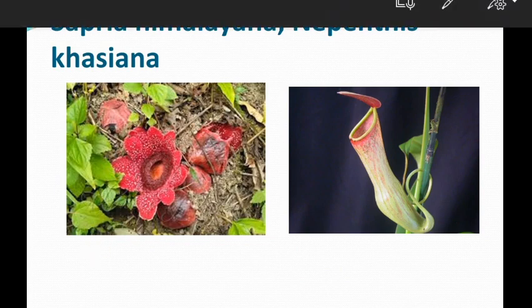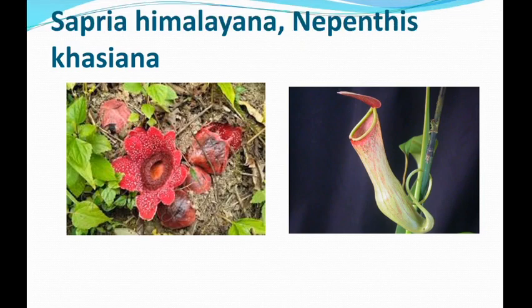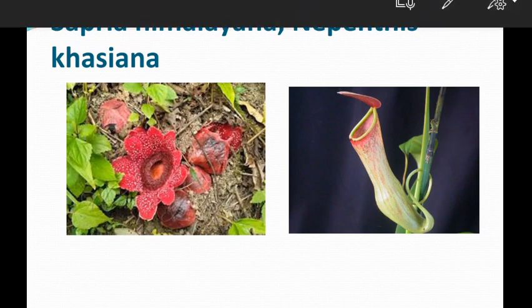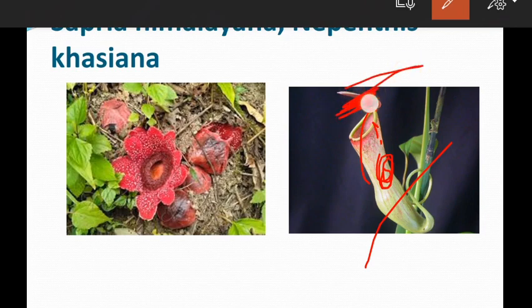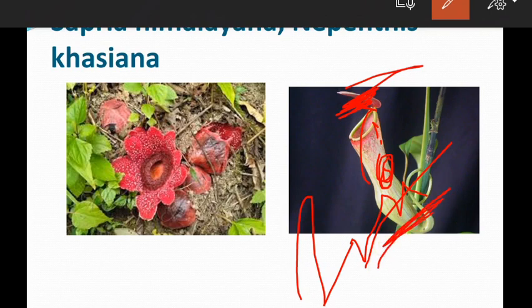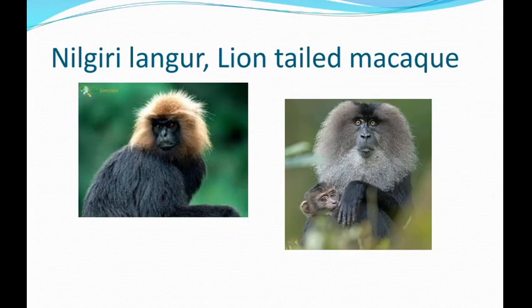The first image shows Sapria himalayana, which is restricted to our nation. Nepenthes khasiana is an insect-eating endemic plant, also restricted to our nation. Nilgiri Langur and Lion-Tailed Macaque are also endemic species restricted to our country. This concludes the topic of endemic species of India.